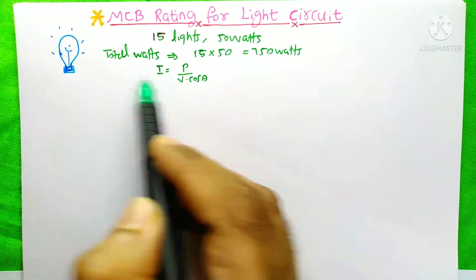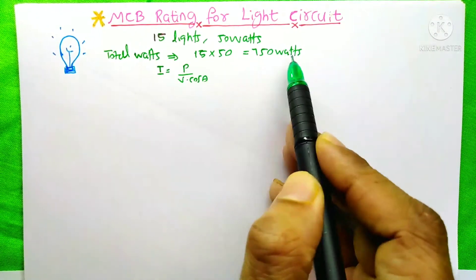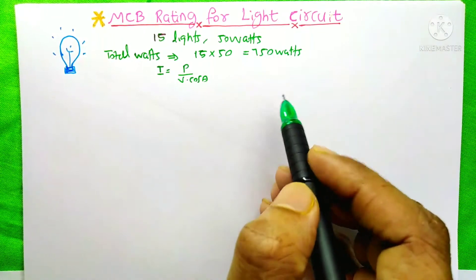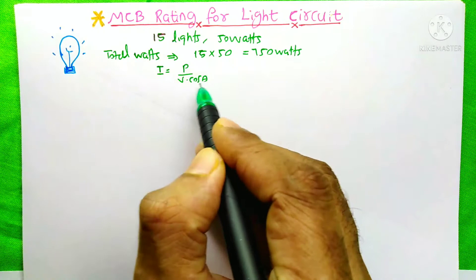The total watts of this circuit will be 15 lights times 50 watts, so 750 watts. I need to calculate the current for this circuit, so I equals P by V cos theta - it's the single phase power equation.